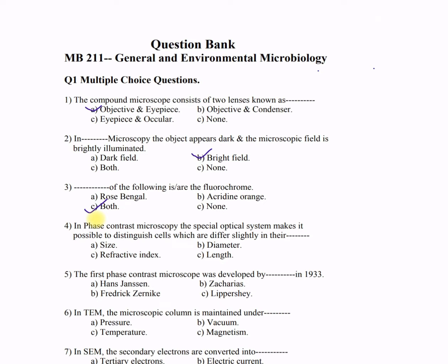Question 4: In phase contrast microscopy, the special optical system makes it possible to distinguish cells which differ slightly in their dash. Options: A) size, B) diameter, C) refractive index, D) length. The correct option is C — refractive index. Cells and their organelles may differ in their refractive index, and that gives the best contrast in phase contrast microscopy.